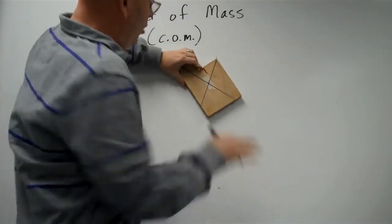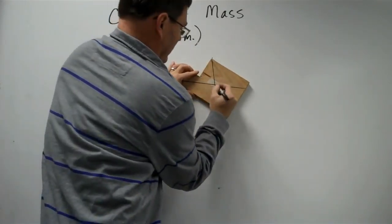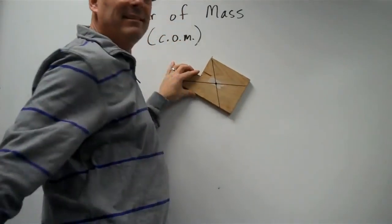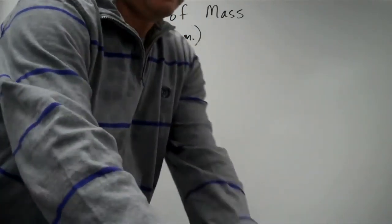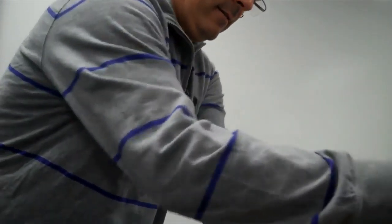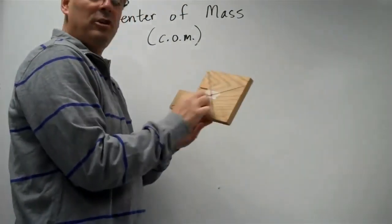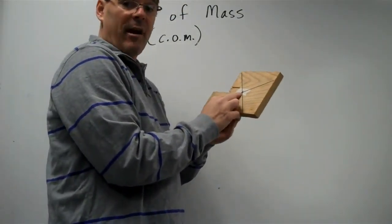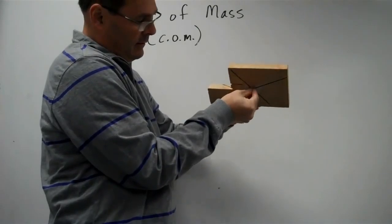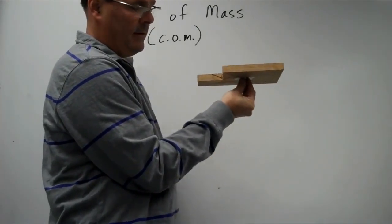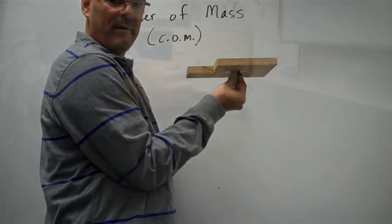And now I know where the lines intersect. That's going to be my center of gravity. And to check that out, I should be able to balance the object at the center of gravity. And in fact, that is where it is.